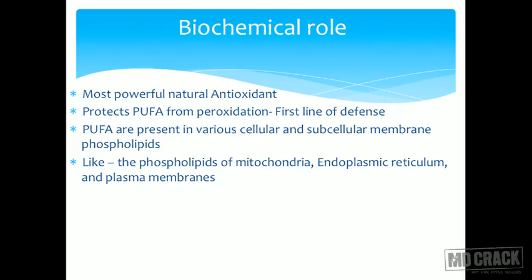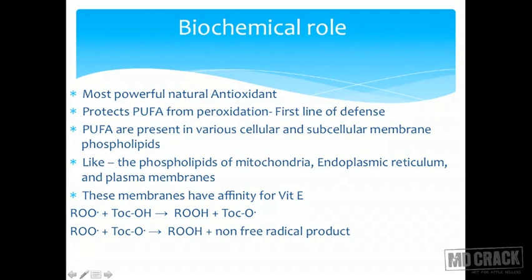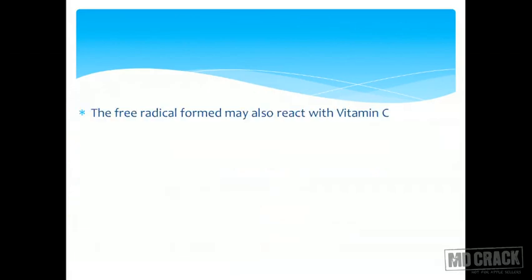PUFA are susceptible to lipid peroxidation everywhere they are present, and Vitamin E combats this. These membranes also have an affinity for Vitamin E. A lipid peroxide combines with tocopherol and converts it into a free radical. That tocopherol radical then combines with another PUFA peroxy radical to form a non-free radical product — so it acts as a chain-breaking antioxidant. The tocopherol radical can also react with Vitamin C, enabling communication between fat membrane and cellular antioxidants.